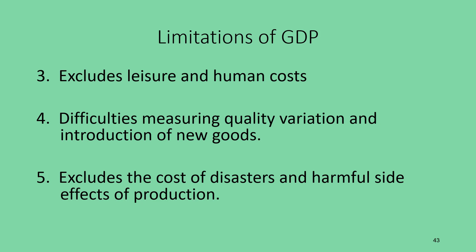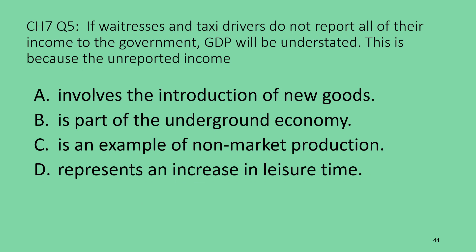Here's an example question: If waitresses and taxi drivers don't report all of their income to the government, GDP will be understated. Is this because it (A) involves new goods, (B) is part of the underground economy, (C) is non-market production, or (D) represents increased leisure time? The answer is B — the underground economy. These workers are providing services and being paid on the marketplace; they're just not reporting all of it. Non-market production would be driving yourself rather than paying a taxi driver.